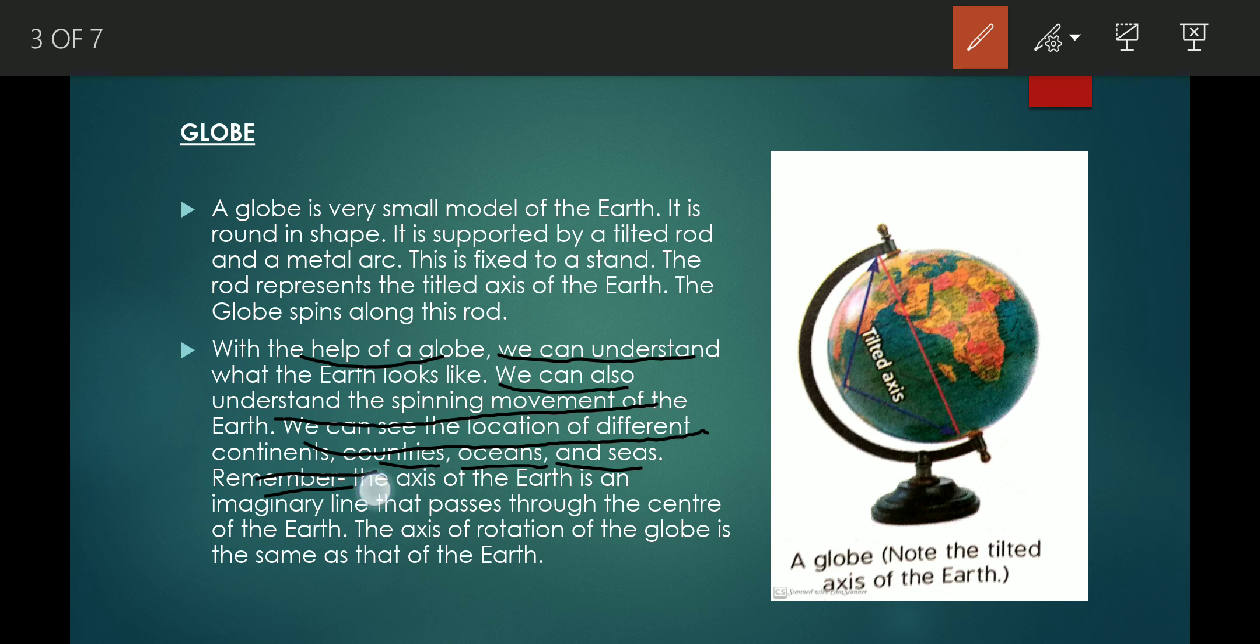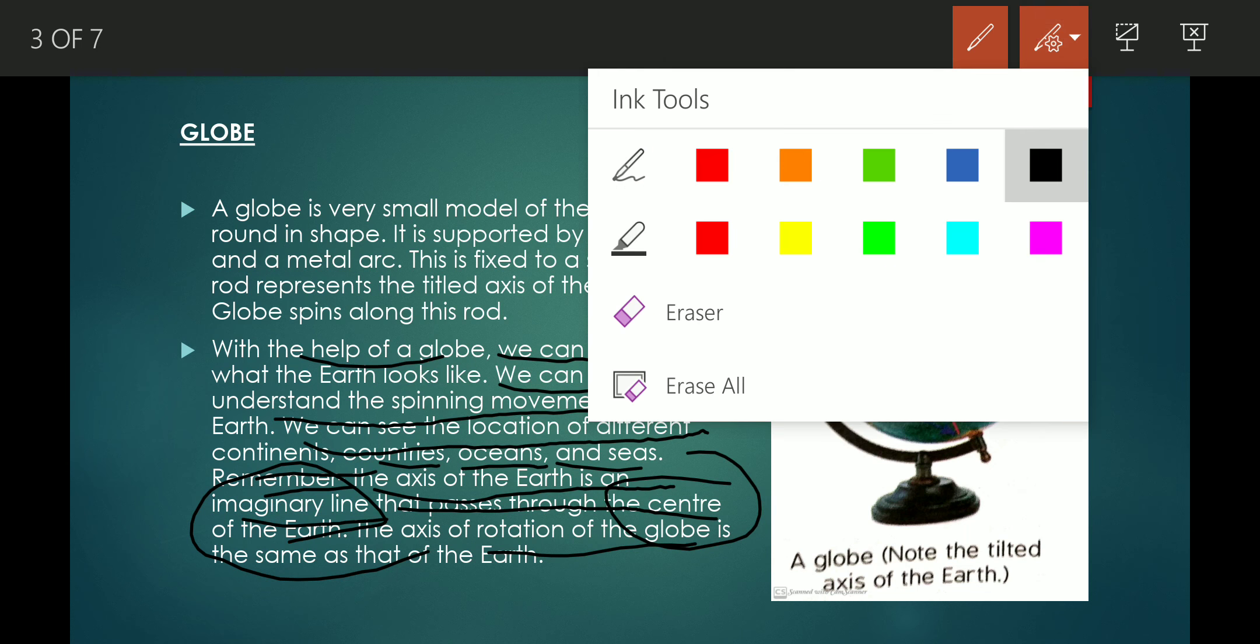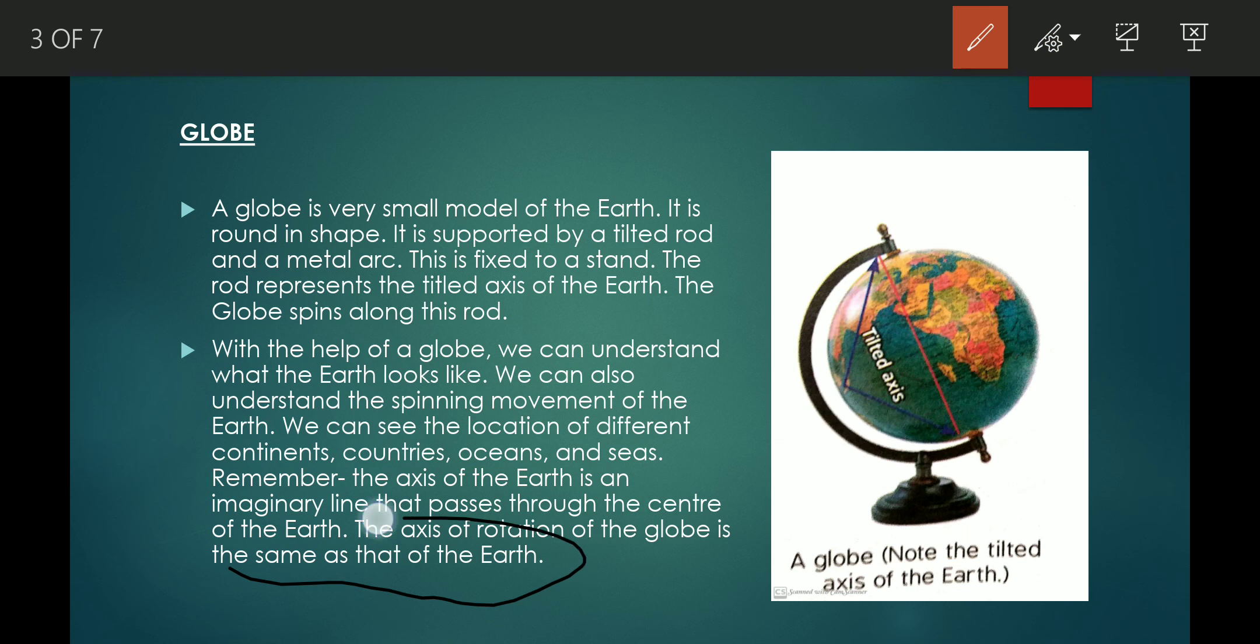Remember, the axis of the earth is an imaginary line that passes through the center of the earth. The axis of rotation of the globe is the same as the earth. The globe is also tilted in an axis of 23 and a half degrees.